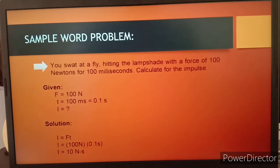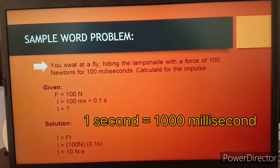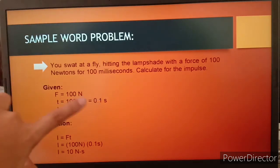So we have here a sample word problem. You swat at a fly, hitting the lampshade with a force of 100 newtons for 100 milliseconds. Calculate the impulse. We have the given force which is 100 newtons and the given time which is 100 milliseconds. As you can observe, the given time here is in milliseconds, and we need to convert it into seconds. In conversion, we have 1 second is equal to 1000 milliseconds. So 100 divided by 1000 is equal to 0.1 seconds.